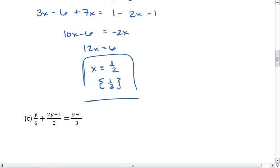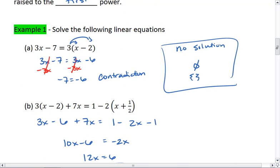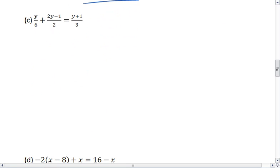We're continuing the examples of solving linear equations in one variable from the previous video. In example C, we want to get rid of these denominators. So what we're going to do is multiply both sides through by 6.